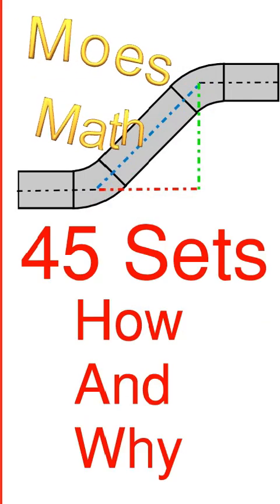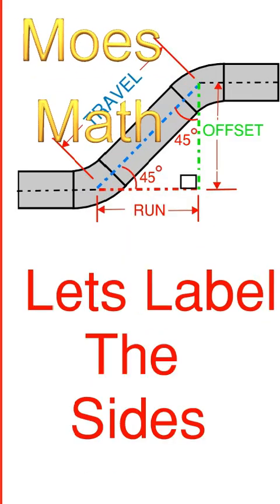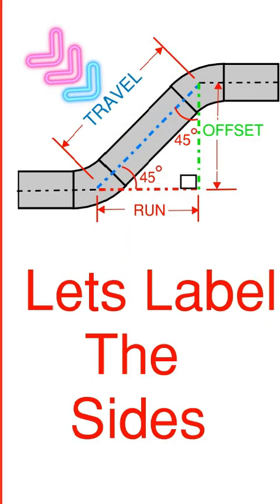We're going to show you how and why we use a certain number. Before we get going, let's label our diagram. We have the travel, which is always opposite the perpendicular corner. It's the blue line and always the longest side of the triangle.